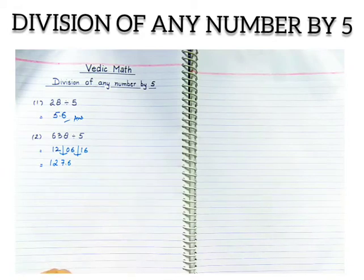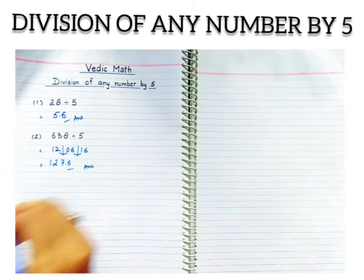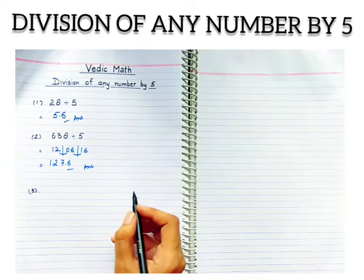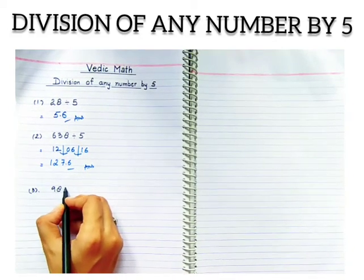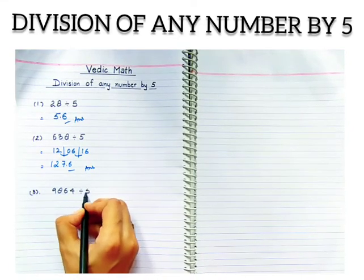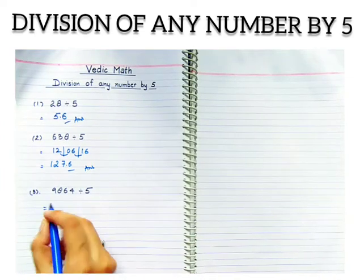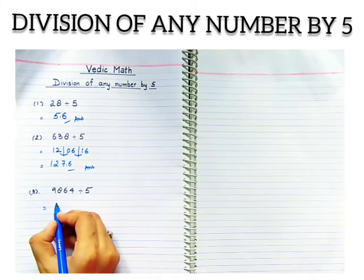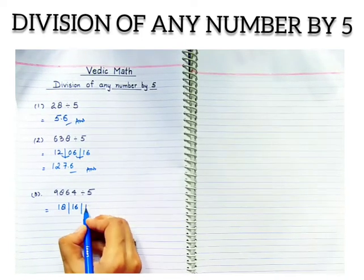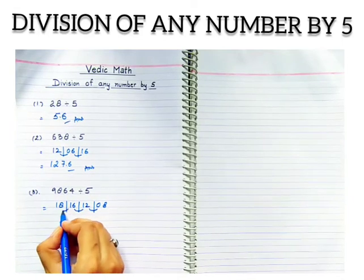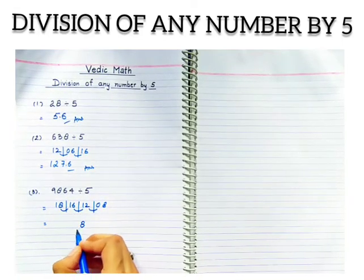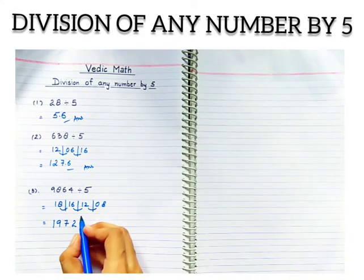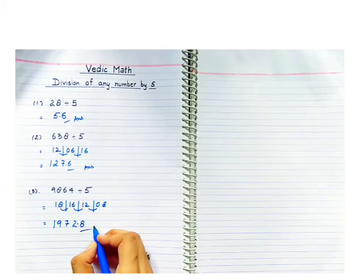Question number three: let's take a four-digit number, 9864 divided by 5. First step is we have to double this number and then we have to put the point before one digit. You also do along with me. This nine becomes eighteen, sixteen, twelve, and eight. Now balance: here comes eight, here two, seven, here nine, and copy down the one as it is. Now what we have to do is put the point before one digit. So here is the answer: 1972.8.